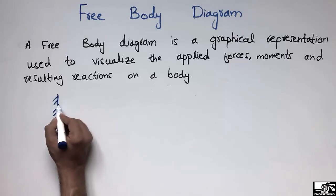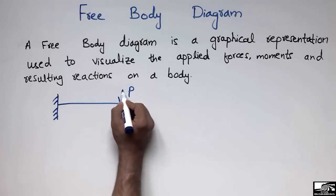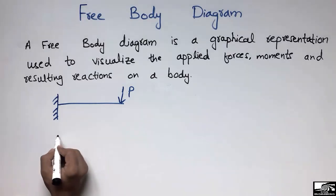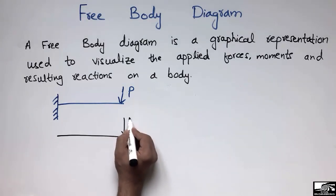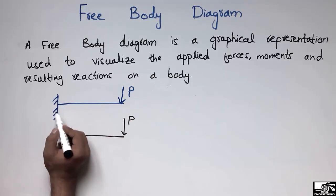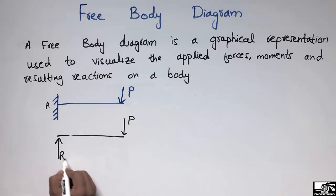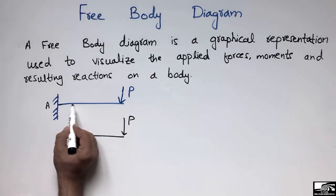Now let's consider a cantilever beam with a point load P acting at the end. I will draw the beam and show the load P acting at the free end. This load will be resisted by the fixed support at point A, so the reaction provided at this point will be RA, resisting the applied load P.